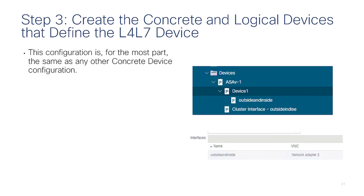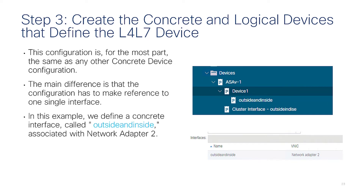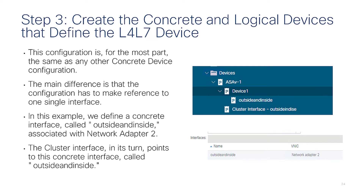Here is the configuration that differs from the two-arm configuration. When you define the concrete and logical device, you go to Layer 4 and Layer 7 devices and create a new device. In this case you create just one interface — called outside and inside — pointing to network adapter 2 of the ASAv. The cluster interface in turn points to device 1, interface outside and inside.